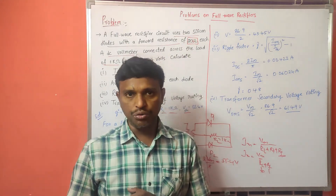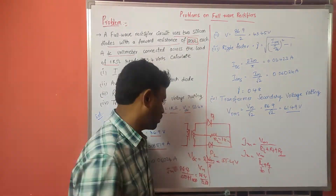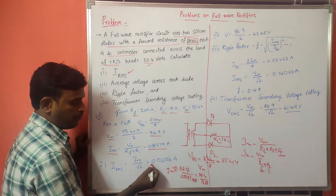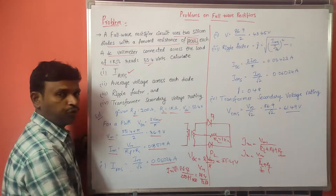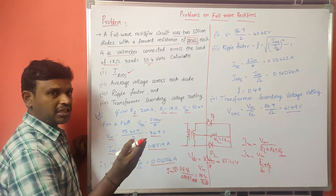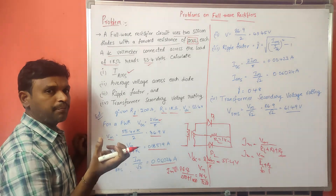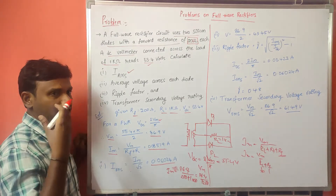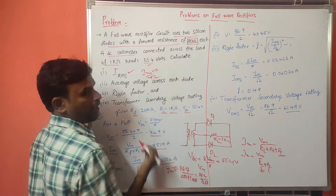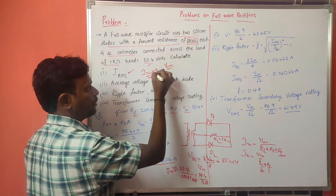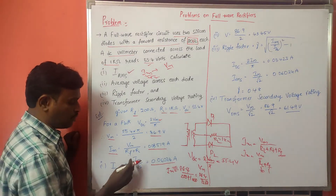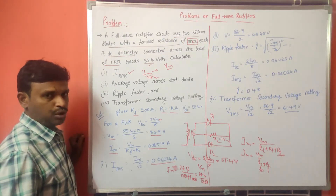IRMS for a half wave rectifier is Im by 2, but for a full wave rectifier it is Im by root 2. So IRMS = Im divided by root 2 = 0.08519 divided by root 2, giving 0.06024 amperes. To summarize: we used VDC to find Vm, then Vm to find Im using Im = Vm divided by RF plus RL, and finally IRMS = Im by root 2 = 0.06024 amperes.